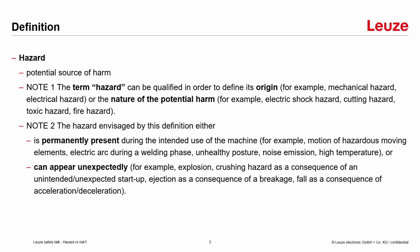The hazard is either permanently present during the intended use of the machine — for example, the motion of hazardous moving elements — or it can appear unexpectedly, for example, an explosion. That's something we do not really expect, but maybe it can happen every two, five, or seven years.